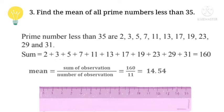We apply the mean formula: sum of observation upon number of observation. These numbers total 11, so 160 divided by 11 equals 14.54. So the answer is 14.54.